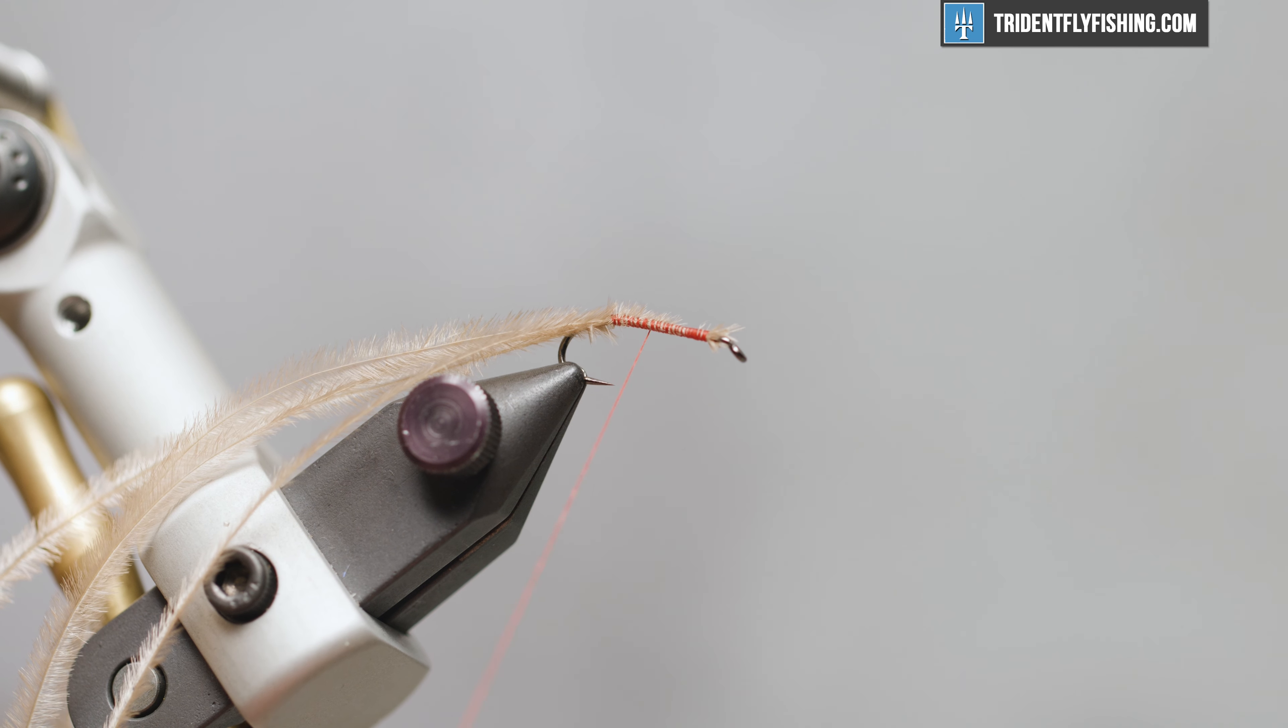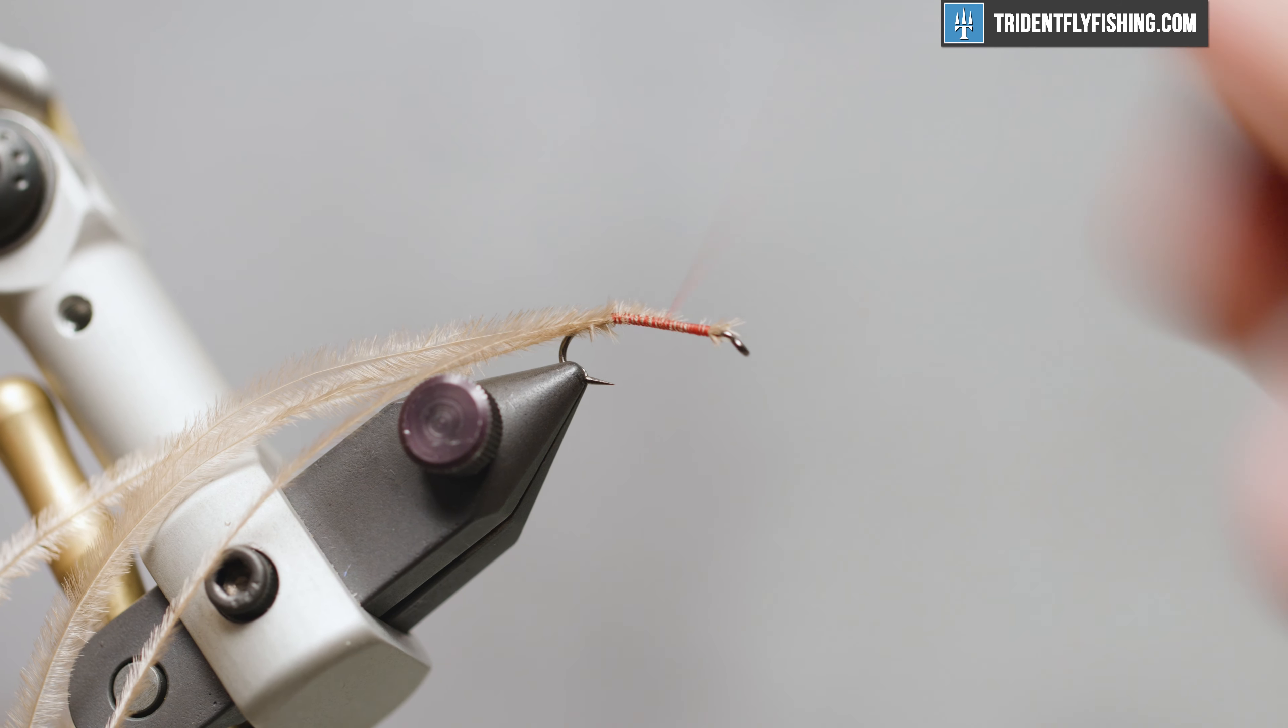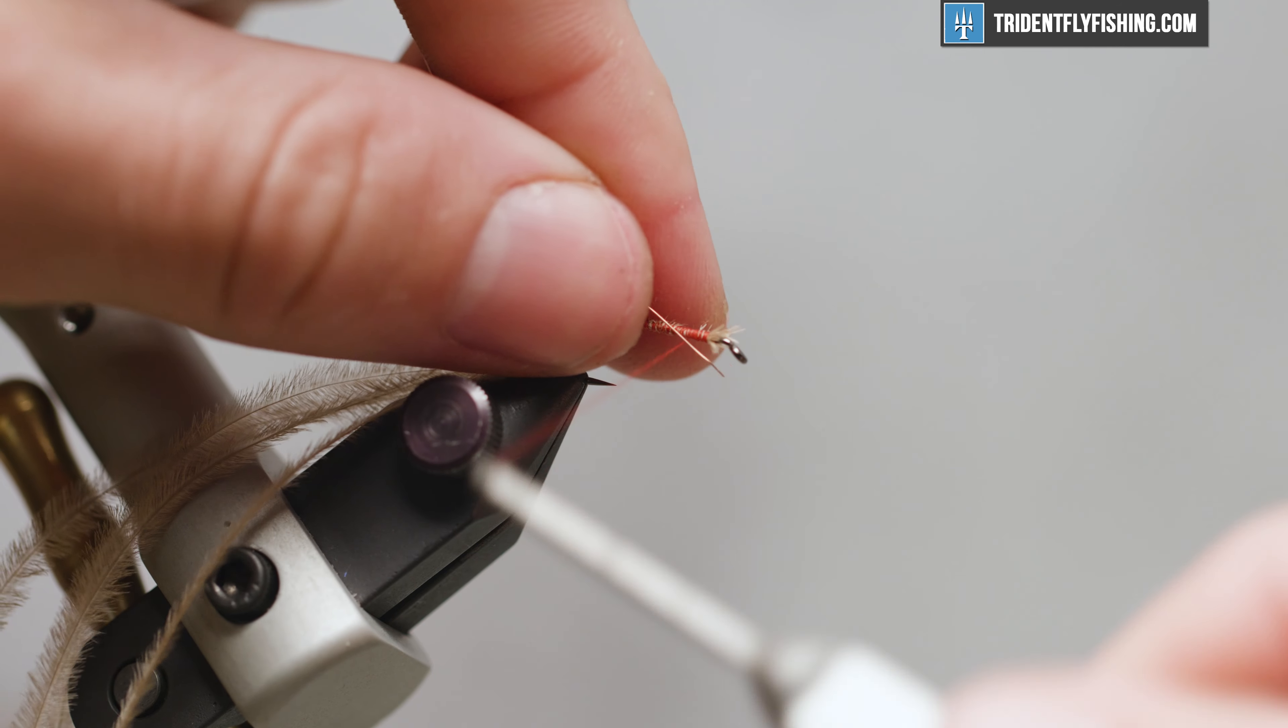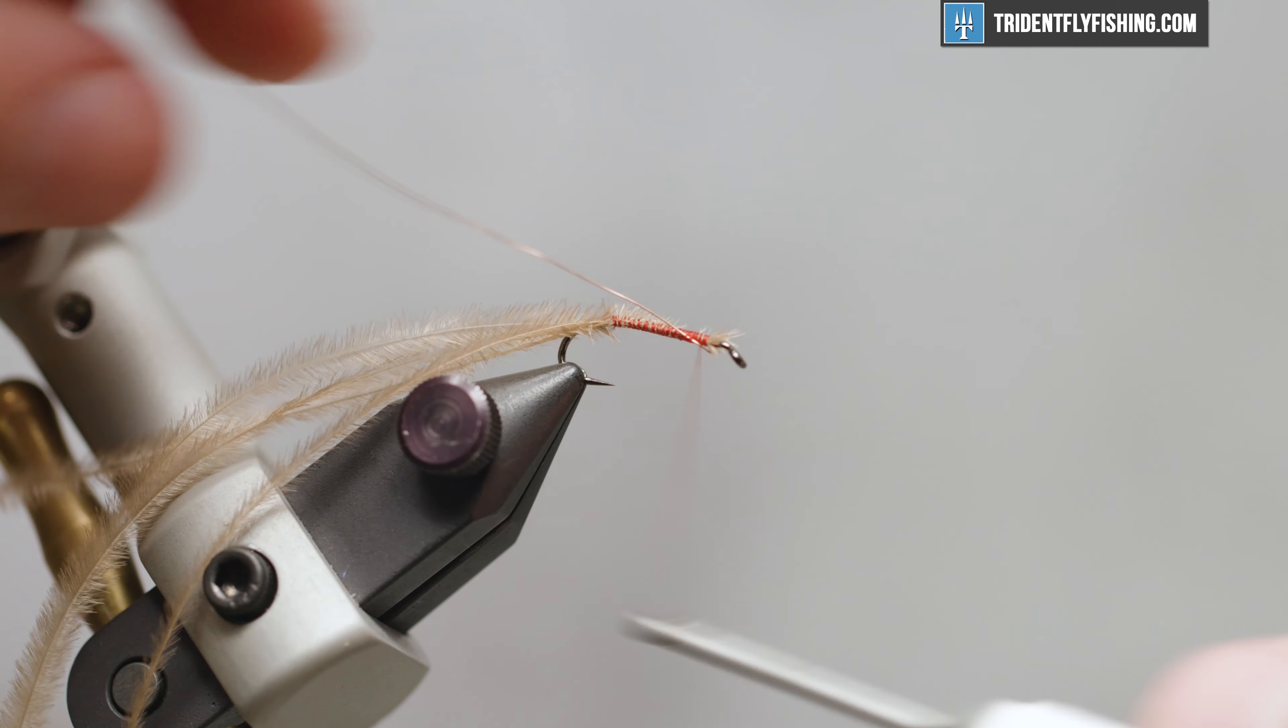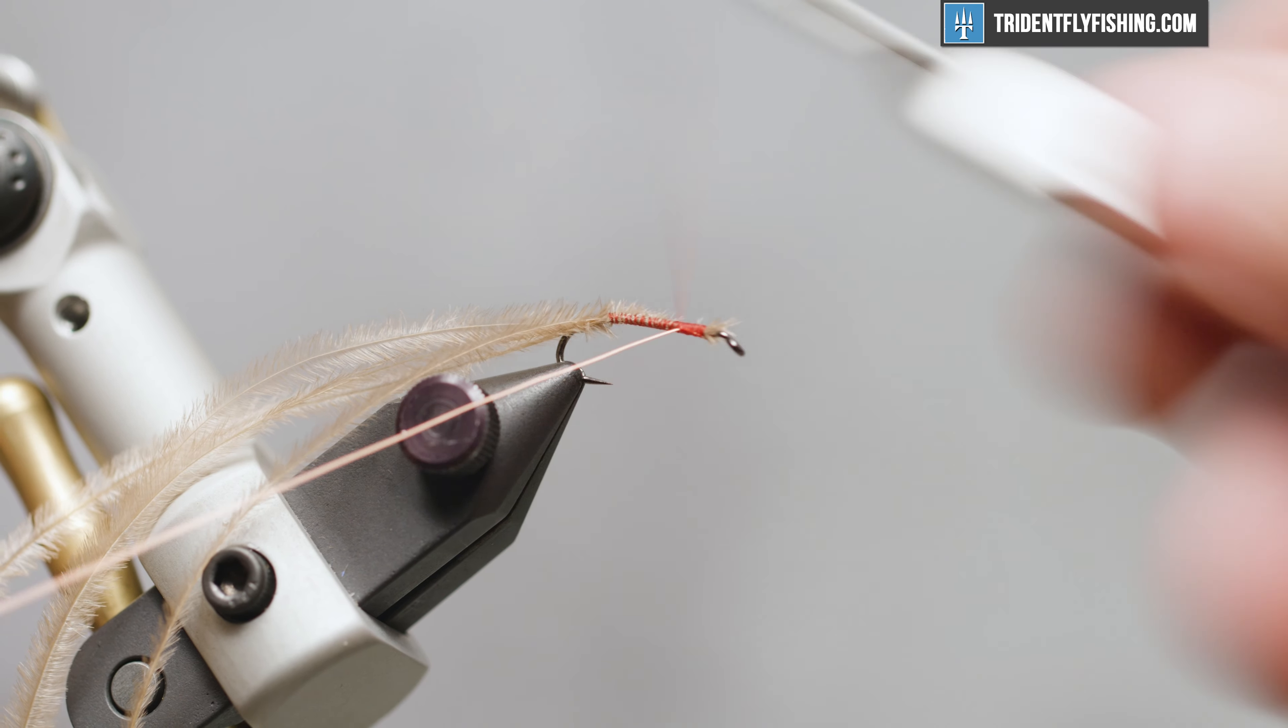From there, move on into some small ultra wire, color copper. We're going to put it on just like we did with that ostrich - pin, trap, and bring it on back.